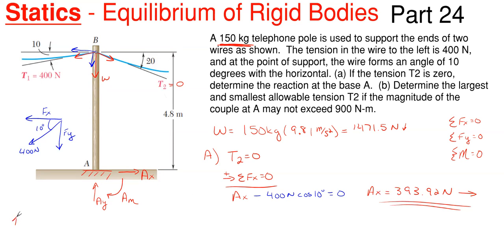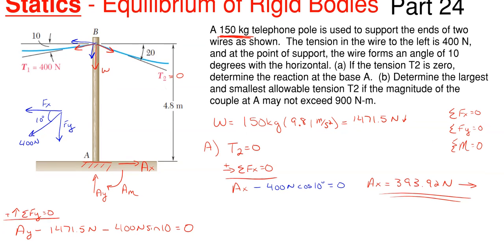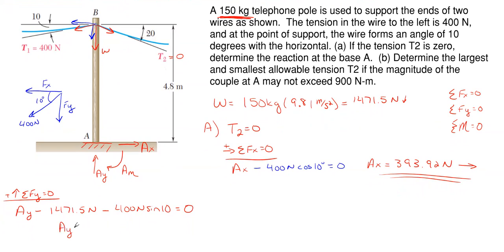For the vertical direction, summing forces in y equal to zero: A sub y is upward (positive), the weight of 1471.5 newtons is downward (negative), and the vertical component of T1 is downward so it's minus 400 newtons times sine of 10 degrees — sine because the Fy component is opposite the angle. Solving: A sub y = 1540.9 newtons upward (positive confirms assumed direction).